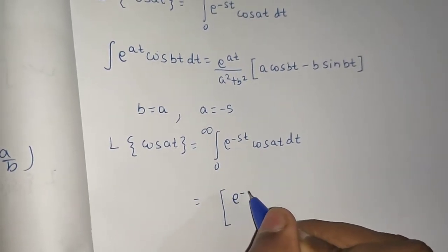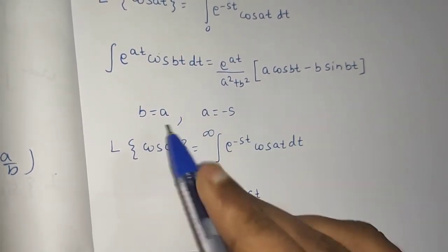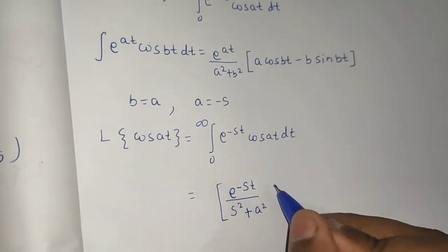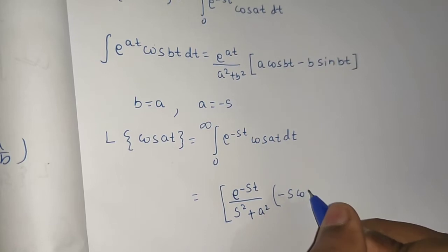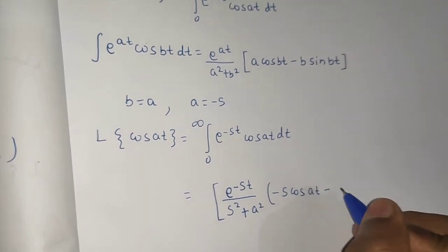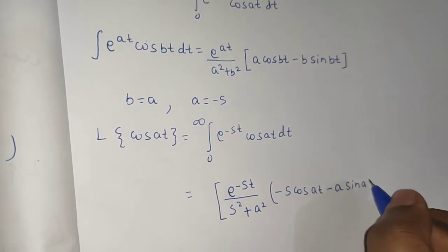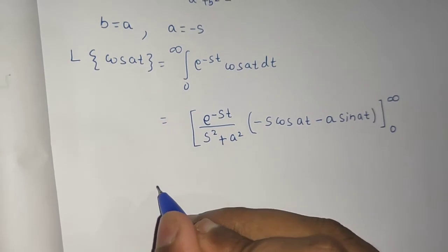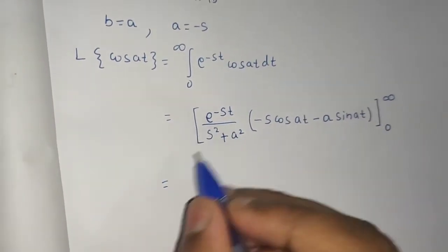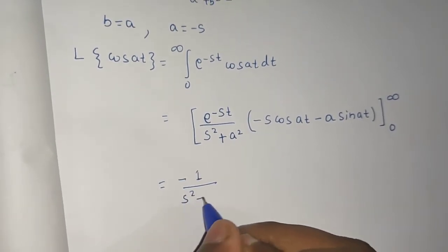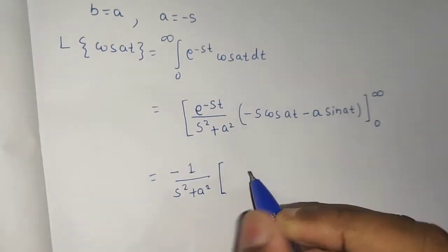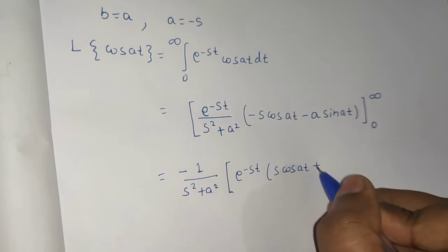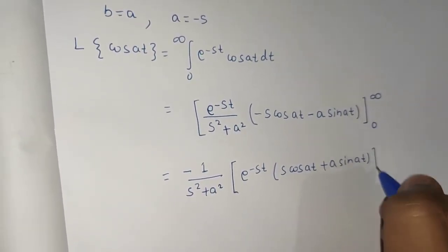Applying the substitution, this integral equals [e^(−st) divided by (s² + a²)] times [−s·cos(at) minus a·sin(at)], evaluated from 0 to infinity. You can take the minus sign and (s² + a²) out, leaving 1/(s² + a²) times [e^(−st) · (s·cos(at) + a·sin(at))] from 0 to infinity.